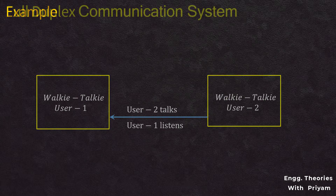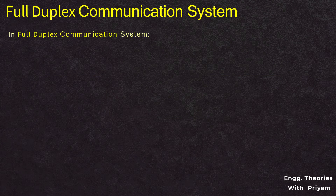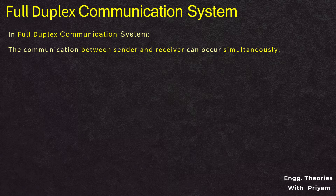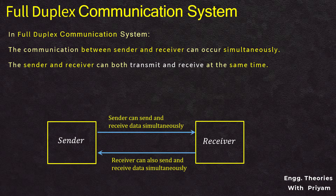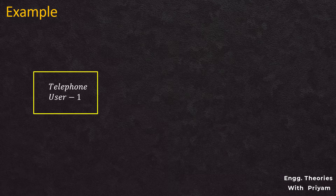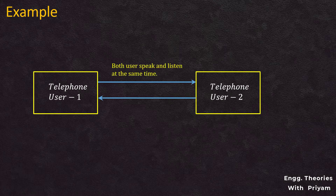An advantage of the half duplex system is that a single track is cheaper than double tracks. In the full duplex communication system, communication between sender and receiver can occur simultaneously in both directions — both can transmit and receive at the same time. It is constructed as a pair of simplex links enabling bi-directional simultaneous transmission. Full duplex can be thought of as a two-way road. A telephone conversation is an excellent example; both people can speak and listen at the same time. Email and instant messaging apps like WhatsApp also follow full duplex mode. USB 2.0 and lower use half duplex, while USB 3.0 and higher use full duplex.